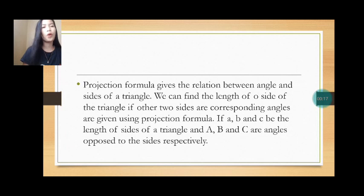Projection formula gives the relation between angle and sides of a triangle. We can find the length of a side of the triangle if other two sides are corresponding angles are given using projection formula. If a, b, and c be the length of sides of a triangle, and A, B, and C are angles opposed to the sides respectively.